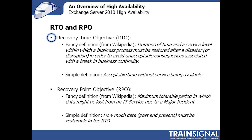The next key concept for high availability is the Recovery Point Objective, or RPO. The formal definition is the maximum tolerable period in which data might be lost from an IT service due to a major incident. The simple definition is how much data — past and present — must be restorable within the RTO. When you look at recovering data, you need a reasonable backup to recover past data from disaster. But for present data, do you need recovery up to the second, up to the nanosecond?